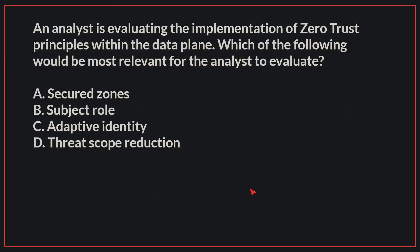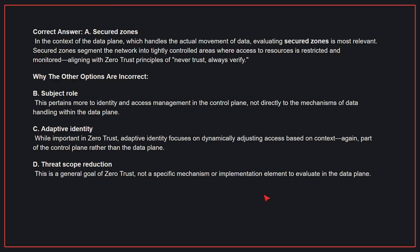An analyst is evaluating the implementation of zero trust principles within the data plane. Which of the following would be most relevant for the analyst to evaluate? The correct answer is A: Secured Zones. In the context of the data plane, which handles the actual movement of data, evaluating secured zones is the most relevant. Secured zones segment the network into tightly controlled areas where access to resources is restricted and monitored, aligning with zero trust principles of never trust, always verify.